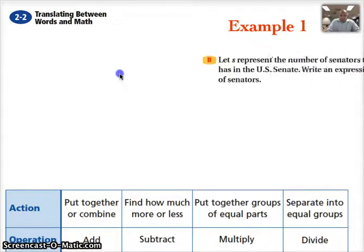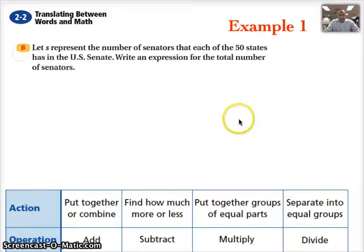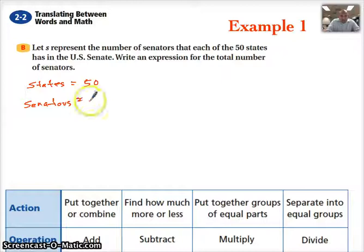Next, we've got another problem. Here it says, let S represent the number of senators that each of the 50 states has in the U.S. Senate. Write an expression for the total number of senators. So here we have 50 states. I'm going to write down states, and we know there's 50 of them. And they want to represent the senators that represent each state to be the variable S.